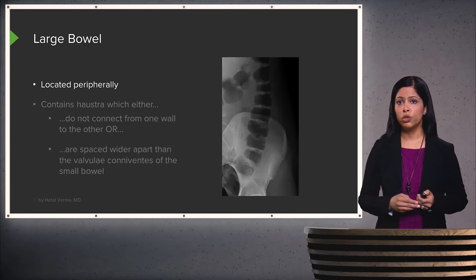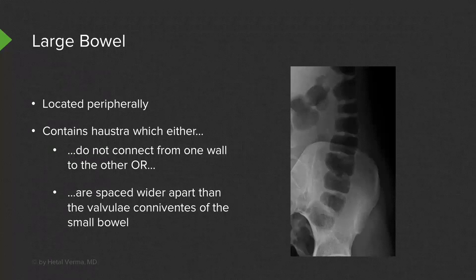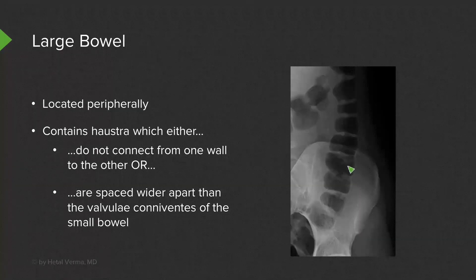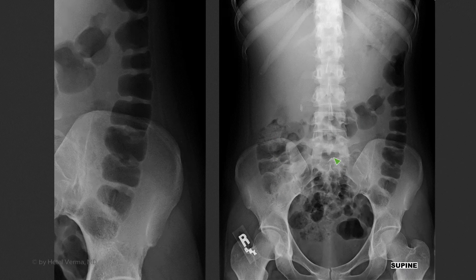Large bowel, on the other hand, is usually located peripherally and contains haustra. The haustra either do not connect from one wall to the other, or are spaced much wider apart than the valvulae conniventes. Looking at this image, the haustra do go from one end of the wall to the other, but they don't have the typical stacked coin appearance of small bowel — they're much wider apart. Large bowel is again seen predominantly in the periphery, while air within small bowel is seen more centrally.